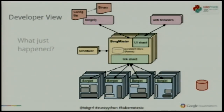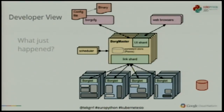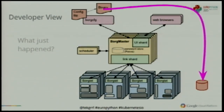Borg runs within a cell. Each cell has its own Borg master, its own Borg configuration. In this case, we have a Borg master which is highly replicated — we have five copies of it for resilience. These machines down here are all running a thing called a Borglet. We have a scheduler. The developer creates their binary using a massively distributed parallel build system — now available open source called Bazel.